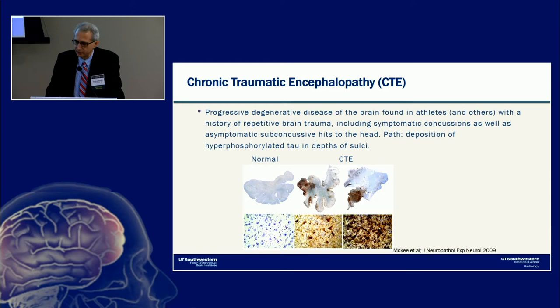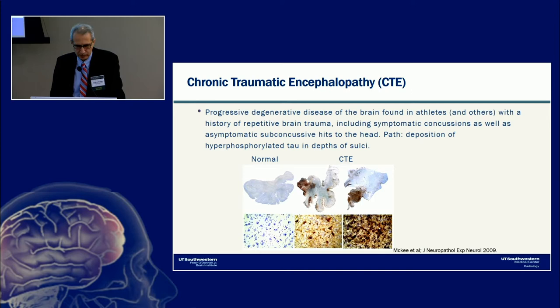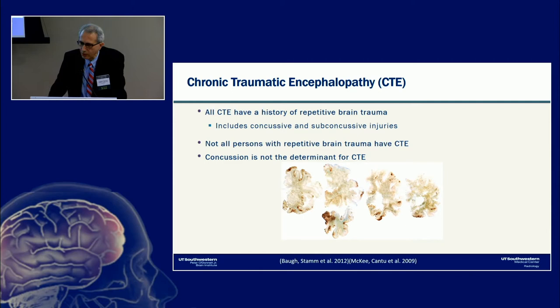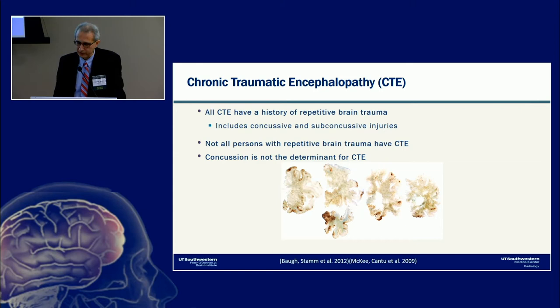CTE is a progressive degenerative disease of the brain found in athletes and others with a history of repetitive brain trauma, including symptomatic concussion as well as asymptomatic subconcussive hits to the head. The pathology is deposition of hyperphosphorylated tau in the depths of the sulci, which differs in location from other neurodegenerative diseases. All CTE cases have a history of repetitive brain trauma, but not all persons with repetitive brain trauma develop CTE, and concussion alone is not the determinant.